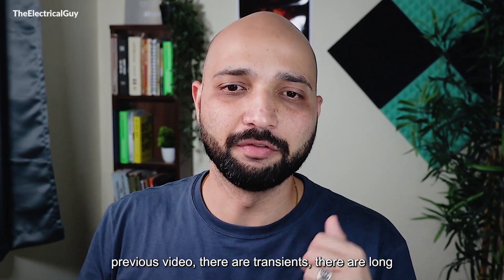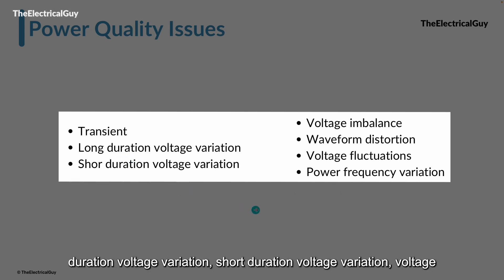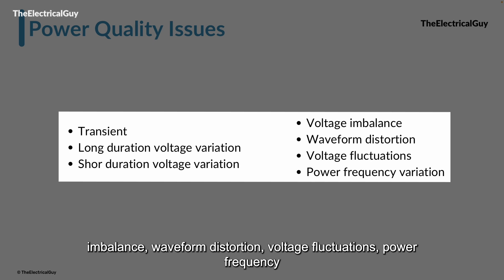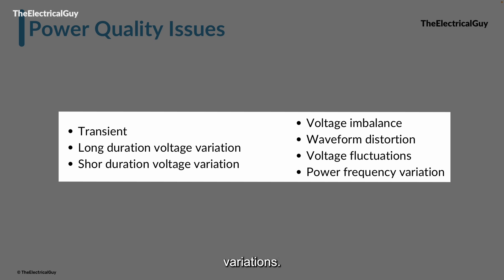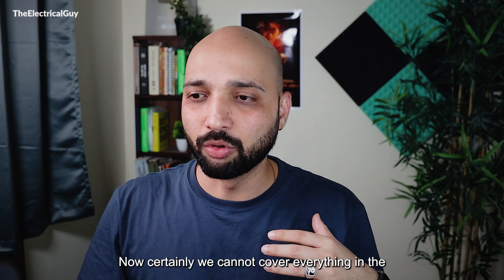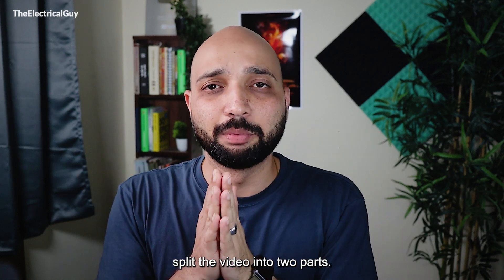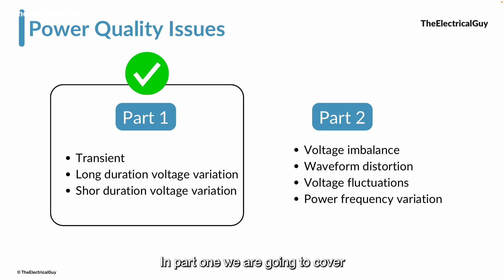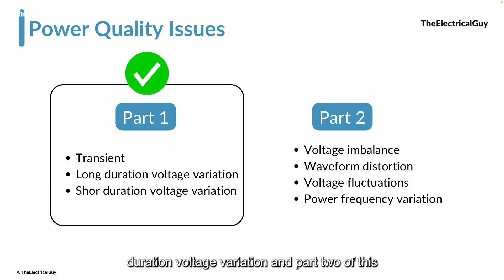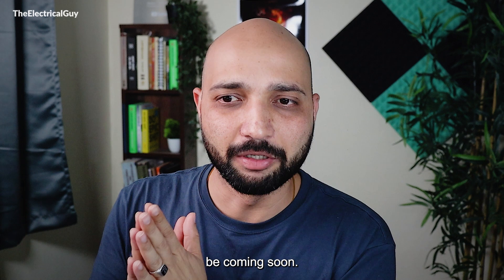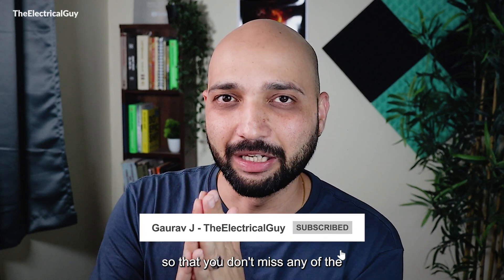So at the end of the previous video we saw there are transients, long duration voltage variation, short duration voltage variation, voltage imbalance, waveform distortion, voltage fluctuations, and power frequency variations. All these are called power quality issues or power quality problems. We cannot cover everything in one video, so we have split it into two parts. Part one covers transients, long duration voltage variations, and short duration voltage variation. Part two will cover balance issues. Make sure you subscribe so you don't miss any updates.